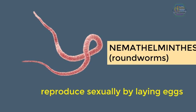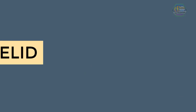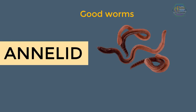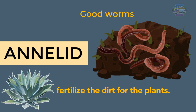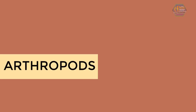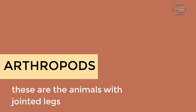Another type is Nematelminthes, or roundworms — most of them are also parasites and reproduce sexually by laying eggs. There are also some good worms, like annelids or earthworms, which fertilize the dirt for plants. Some other examples are leeches — leeches suck your blood when you don't notice, so be careful in ponds.